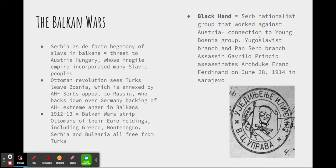The Black Hand had a connection to the Young Bosnia Group, a group of Serbo-Bosnian Slavs who hated being ruled by the Austro-Hungarians. This organization was split two ways: between the Yugoslavists and the Pan-Serbians. Yugoslavists believed that upon gaining independence they should form a massive Slavic nation called Yugoslavia, while the Pan-Serbians believed they should simply fall under the sway of Serbia.